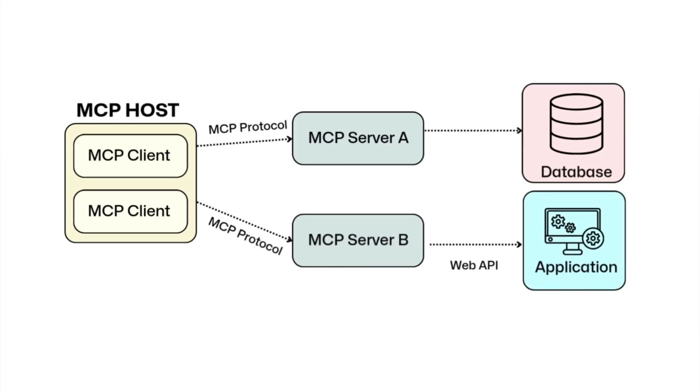That brings us to the fourth component: the MCP protocol. The MCP protocol is like a common language that helps the LLM and the tool — that is, the MCP client and the MCP server — understand each other. It tells both sides how to send a request, what the message should look like, how to describe each action, and what to do when there's an error. Without this shared set of rules, the LLMs and tools wouldn't know how to talk to each other. Because the protocol is standardized, any tool or application that follows MCP protocol can work with any LLM that also supports it.